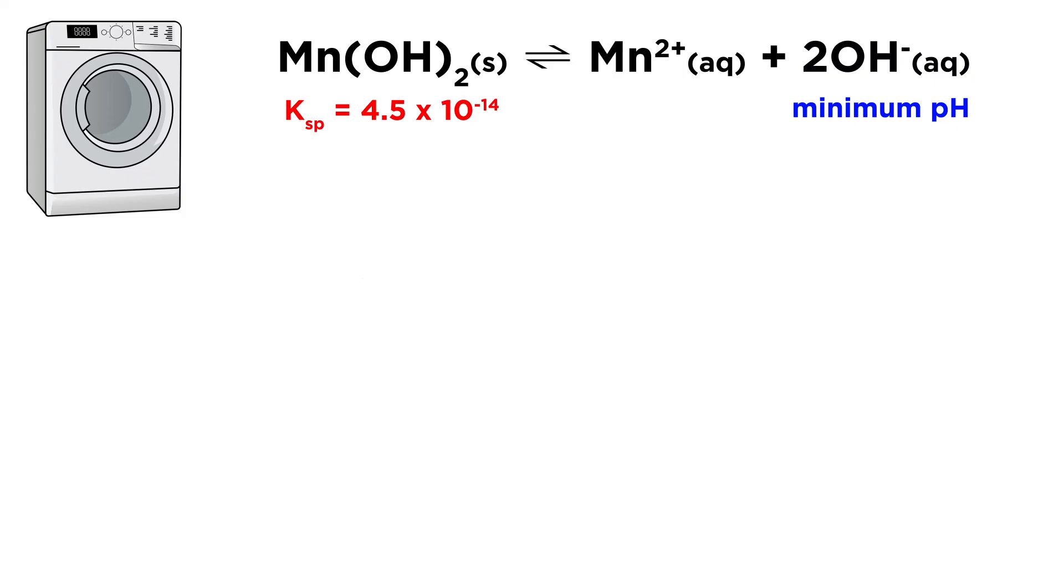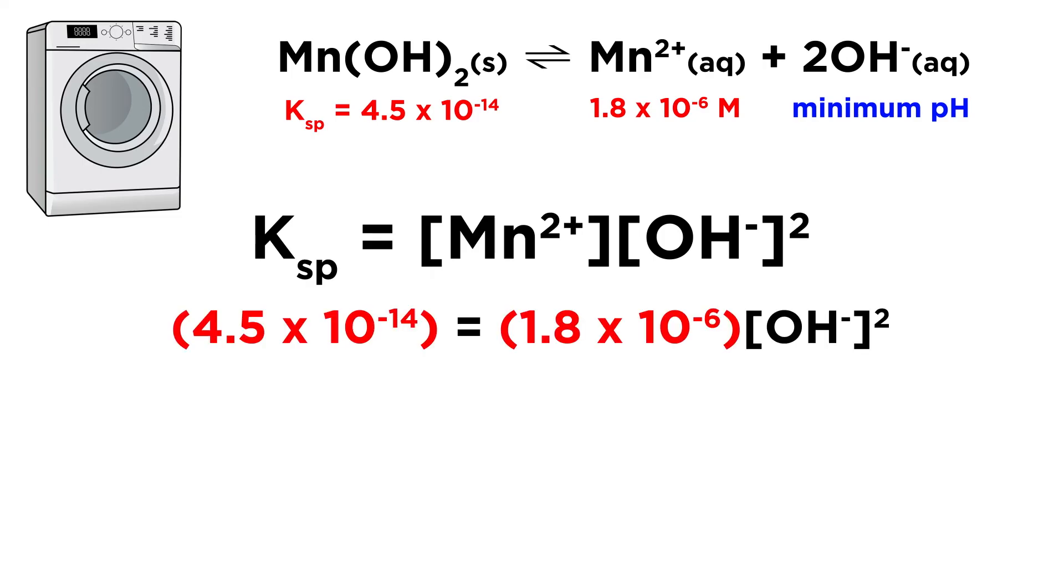So given that this substance has a Ksp of 4.5 times 10 to the negative 14, what pH is required to provide enough hydroxide to keep the manganese concentration at or below 1.8 times 10 to the negative 6? We use the same process as before. We are looking at the point where precipitation occurs, so we can just write out the Ksp expression and plug in the Ksp and the manganese concentration we are interested in. This will allow us to solve for the hydroxide concentration, which will be 1.6 times 10 to the negative 4.